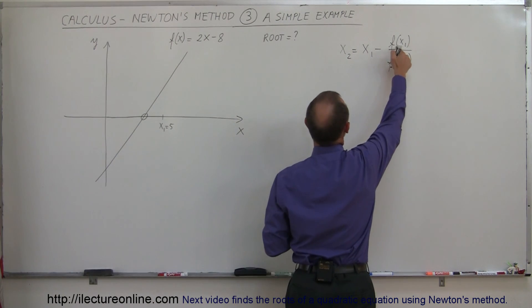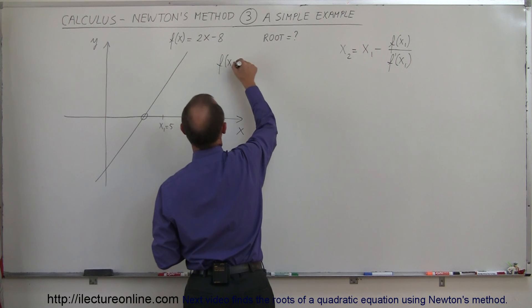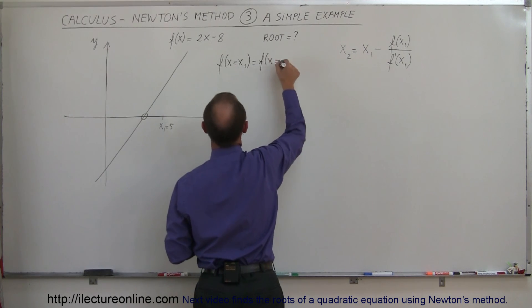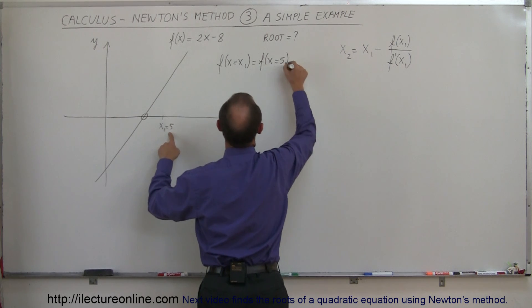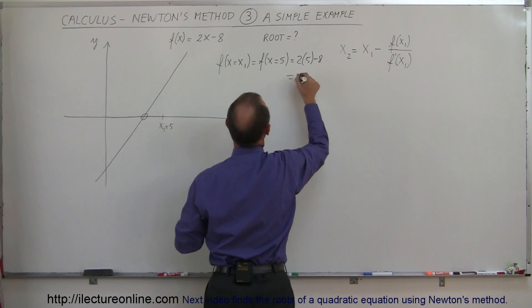So first of all, we need to evaluate the function at x equals 1. So f(x₁) is equal to the function evaluated when x is equal to, we picked it as 5, which is equal to 2 times 5 minus 8, so that's equal to 10 minus 8, which is equal to 2.